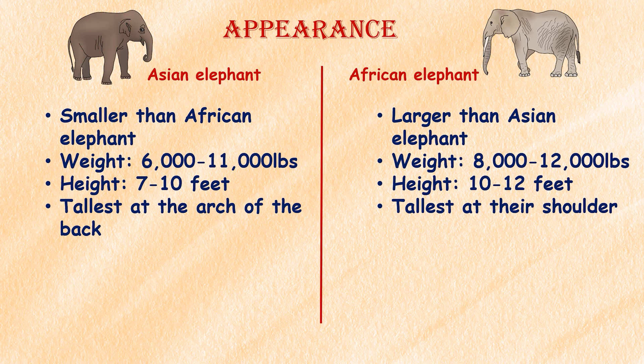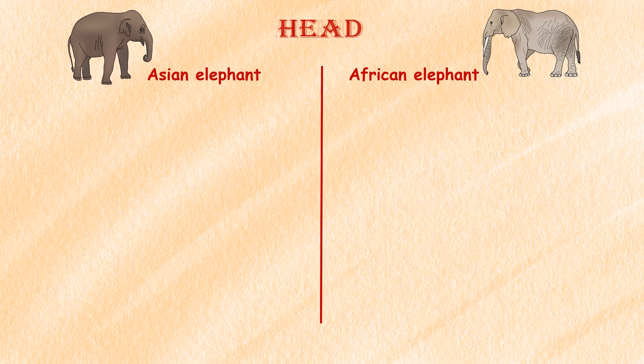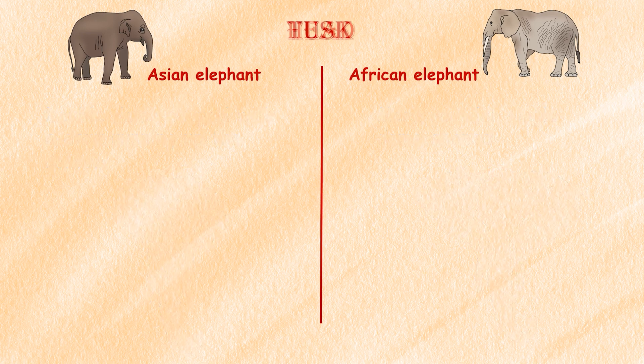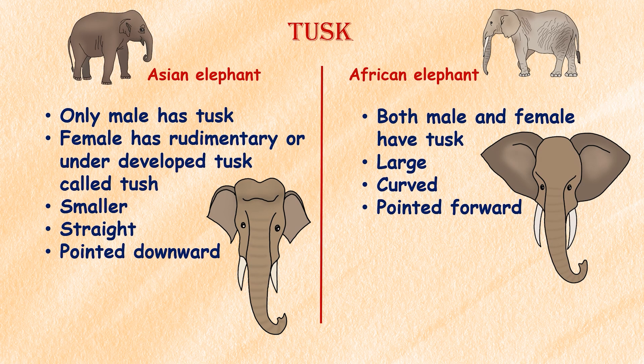An interesting fact about their height: African elephants are tallest at their shoulder, whereas Asian elephants are tallest at the arch of the back. As for the head, African elephants have fuller, more rounded heads with a single dome shape, whereas Asian elephants have a double arch with a dent running up the center of their head.